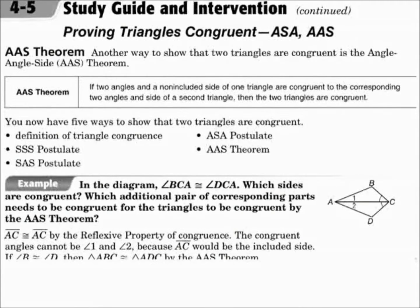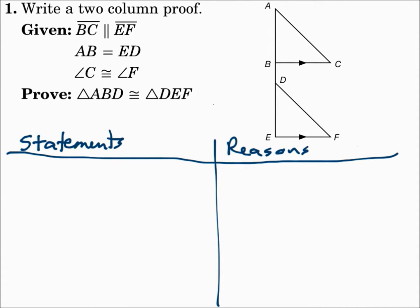The final way to show that triangles are congruent is Angle-Angle-Side. It's two angles and the very next side — not the side between the angles, but the next side. Write a two-column proof: given that segment BC is parallel to segment EF, the measure of segment AB equals the measure of segment ED, and angle C is congruent to angle F, prove that the triangles are congruent.